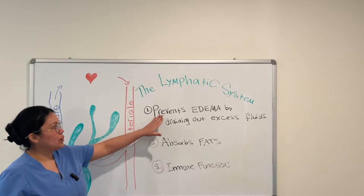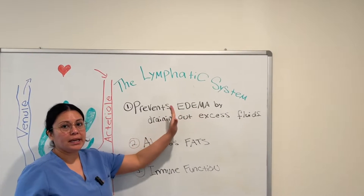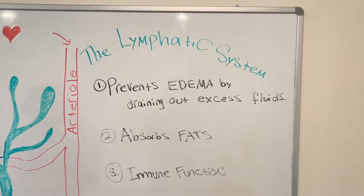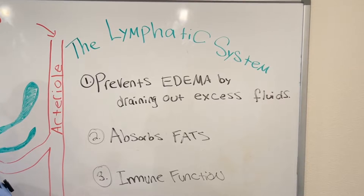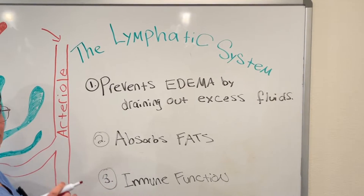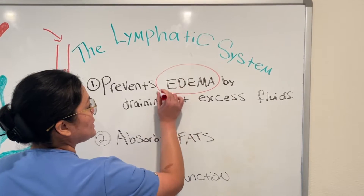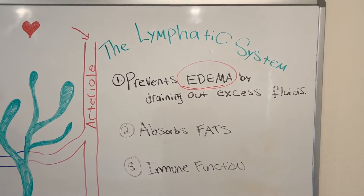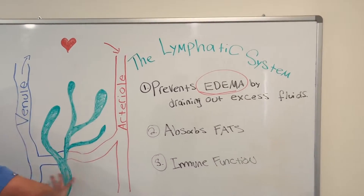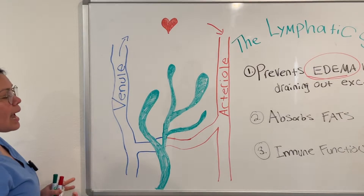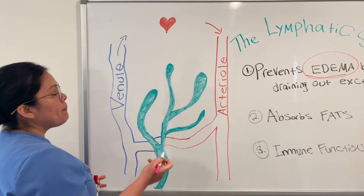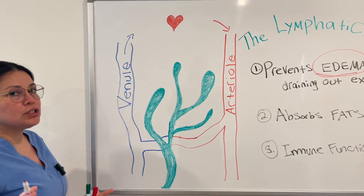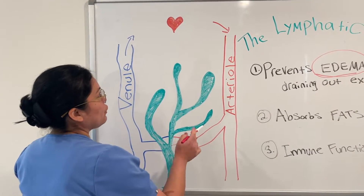We're going to start with the first one: prevents edema by draining excess fluid. The word edema means excess fluid buildup in your interstitial space. In order to understand how the lymphatic system picks up excess fluid from your interstitial spaces, you must first know how the blood capillaries work, so let me give you a quick refresher.